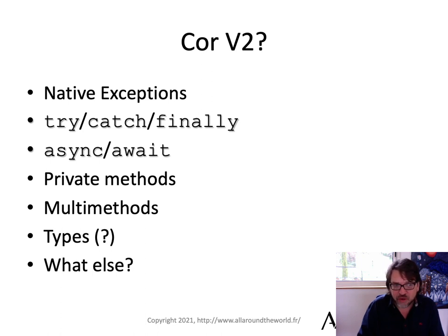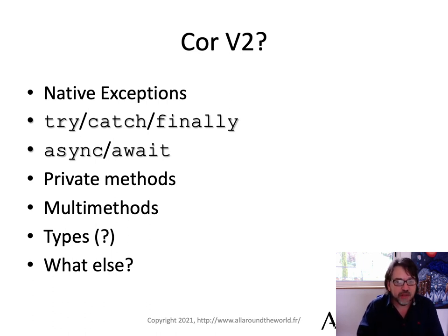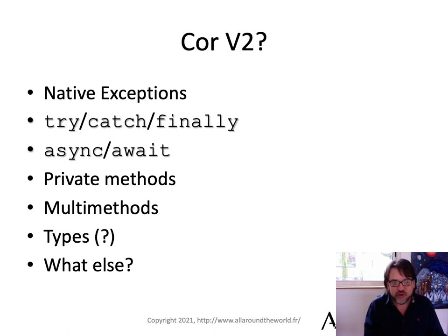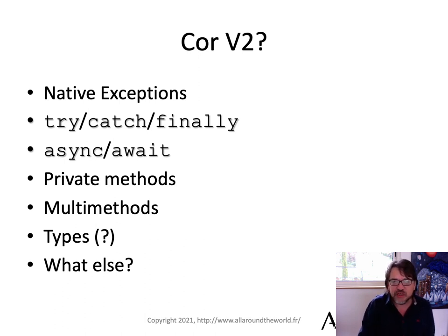And then Core V2: what about native exceptions? What about having try, catch, finally? I think that might actually go into Perl separate from Cor. Async/await might be part of Cor, but I'm hoping that could go into Perl separately. Getting truly private methods — the semantics on that are complicated because of how variable typing works. Is it the variable or the data that the variable's pointing to that has the class assignment? Getting multi-methods in there, having a type system finally would be lovely. There are all sorts of things we can do — it opens up a huge amount of possibilities.